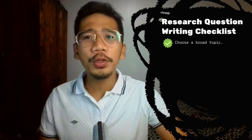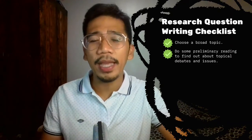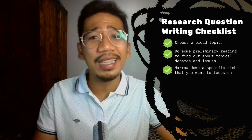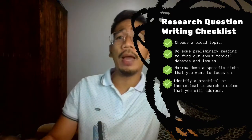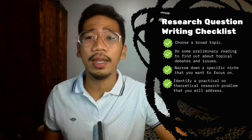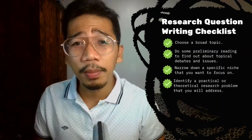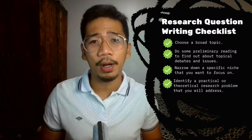The process of developing your research question follows several steps. First, you have to choose a broad topic and then do some primary reading to find out about the topical debates and issues surrounding your topic. Then you have to narrow down a specific niche that you want to focus on. Also, you have to identify a practical or theoretical research problem that you will have to address. When you have a clearly defined problem, you need to formulate one or more questions out of this problem.